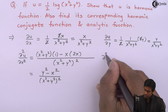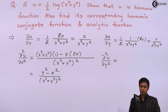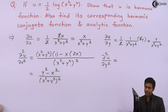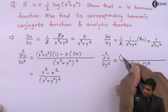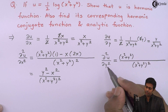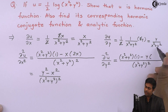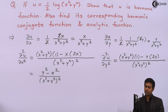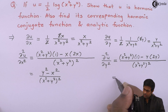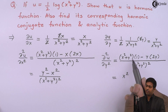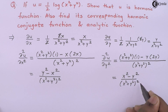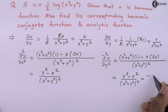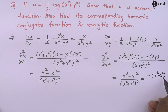Now let's find ∂²u/∂y². We differentiate y/(x² + y²) with respect to y. By the u/v rule, the denominator is (x² + y²)², and the numerator is (x² + y²)·1 minus y·2y, giving x² − y² in the numerator, or equivalently −(y² − x²)/(x² + y²)².